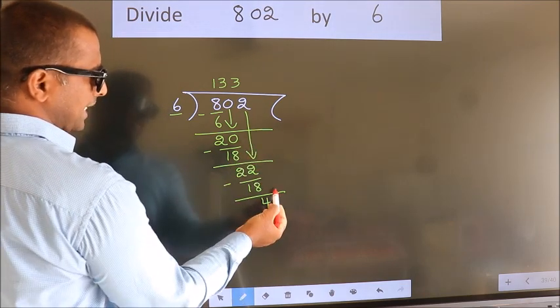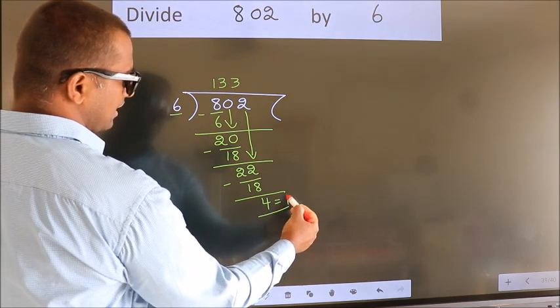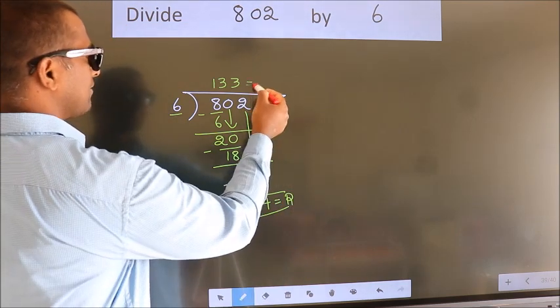No more numbers to bring it down. So, we stop here. This is our remainder. This is our quotient.